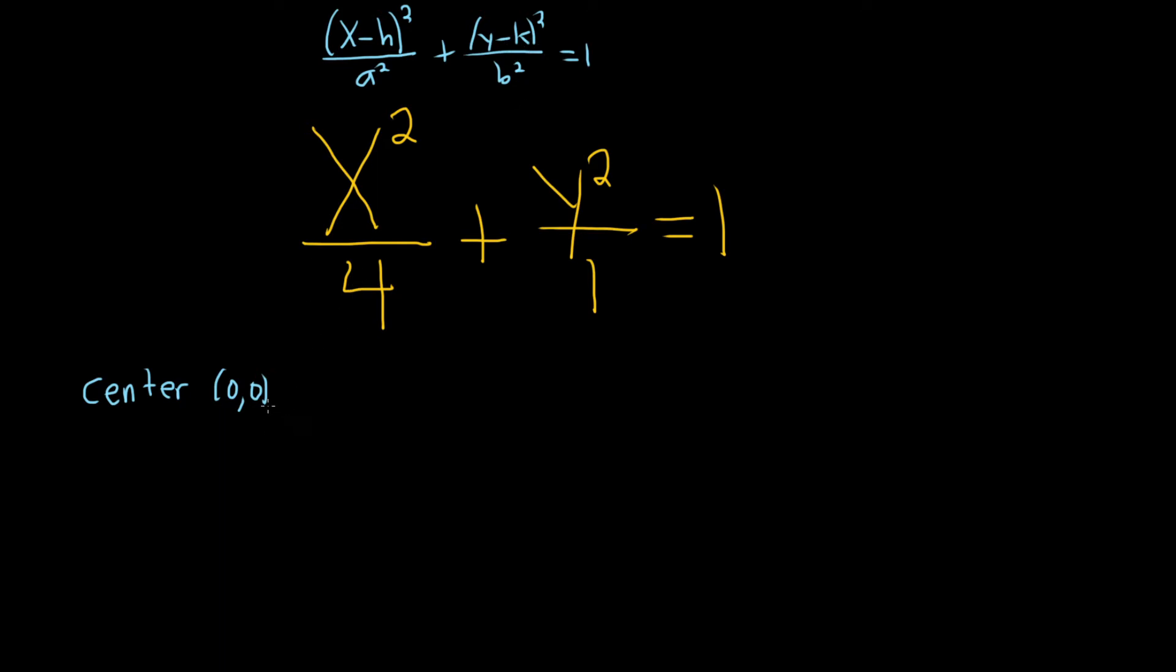In an ellipse, a is always bigger than b, and so a is always the square root of the bigger number. So in this case, the bigger number is 4, so a is the square root of 4, which is 2. And then b is the square root of the other number. So b is the square root of 1, which is 1.